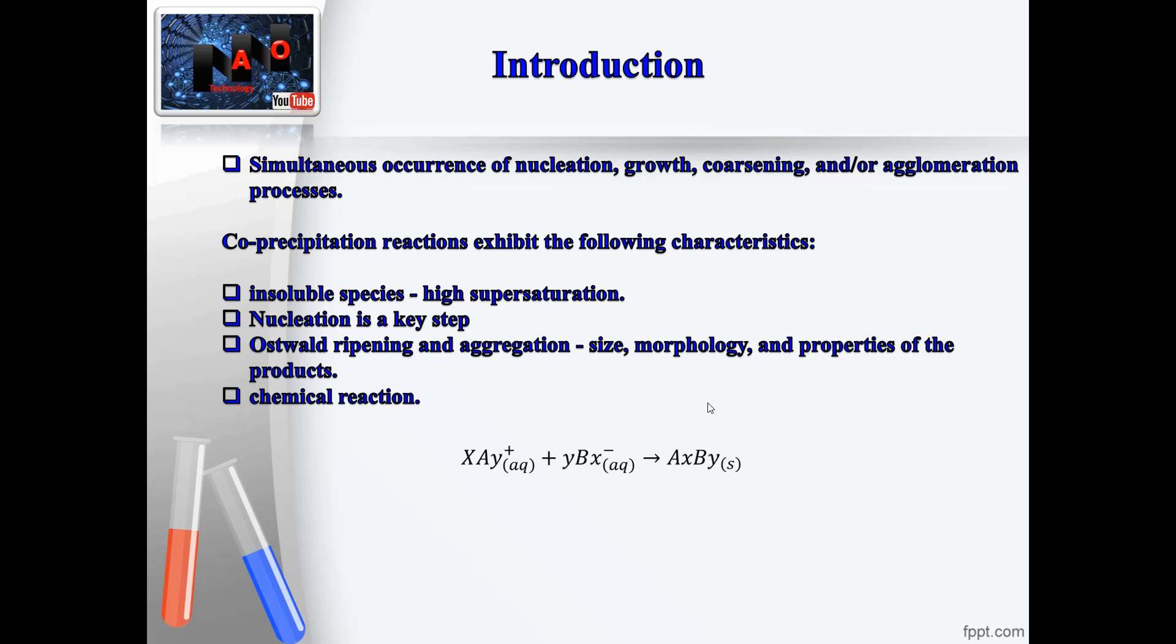Third, secondary processes such as Ostwald ripening and aggregation dramatically affect the size, morphology, and properties of the products. Fourth, the supersaturation conditions necessary to induce precipitation are usually the result of a chemical reaction.